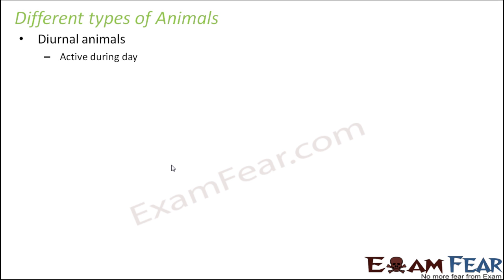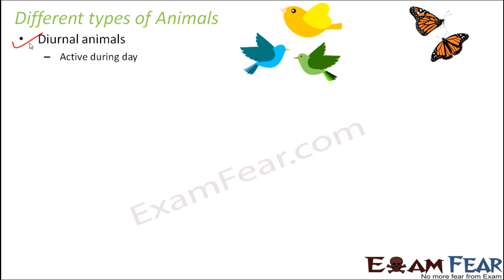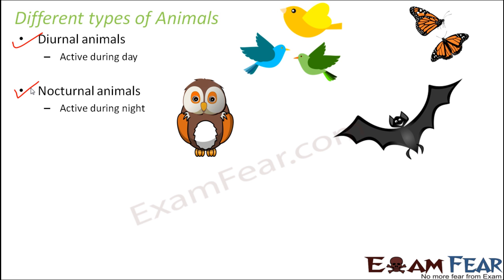There exist different types of animals based on their activity in light. Some animals are more active during the day, and some during the night. Diurnal animals are those which remain active during the day — examples include birds and butterflies. Nocturnal animals are active during the night — the best examples are the owl and the bat.